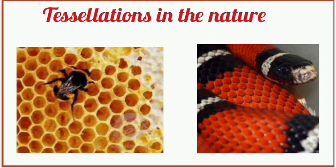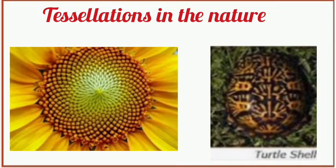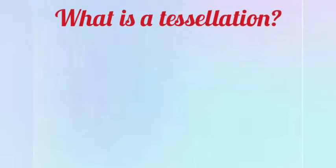These are some examples of tessellations you can see in nature. These creations enhance the beauty of the environment: the beehive, the skin of a snake, the sunflower, the turtle shell, and also the cone. We have special tessellations in nature. Now let's learn what a tessellation is.